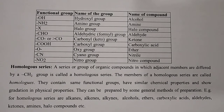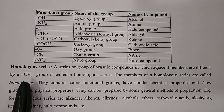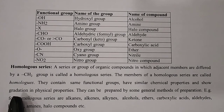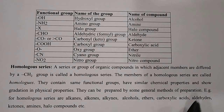Going from ethane to propane, you again get a CH2 increase. So each subsequent member increases by CH2, which corresponds to an increase of 14 atomic mass units. Members of a homologous series contain the same functional group, have similar chemical properties, show gradation in physical properties, and can be prepared by the same general methods of preparation — for example, for alkanes, alkenes, alkynes, and alcohols.